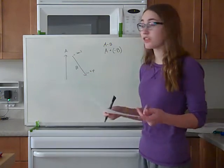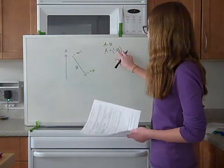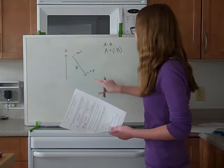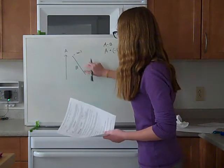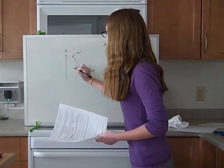And, when a vector is negative, really, when we have a negative vector, we can just flip it upside down. So, instead of having the tip here now, we're going to make this the tail, make this the tip, and call this negative B.